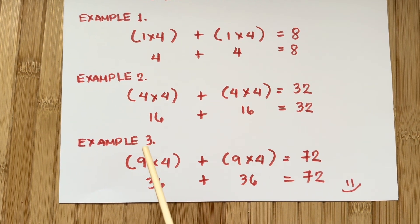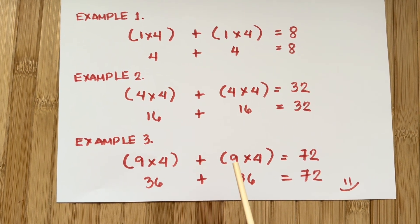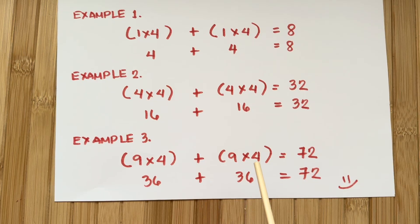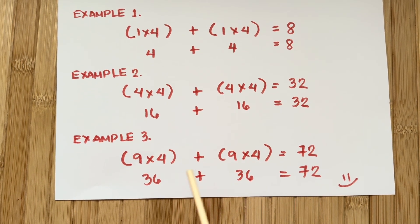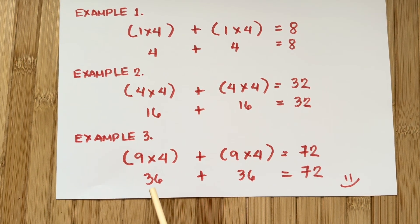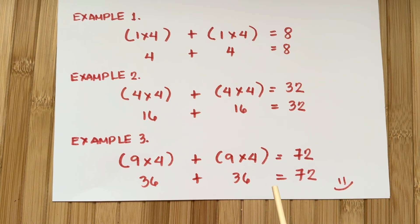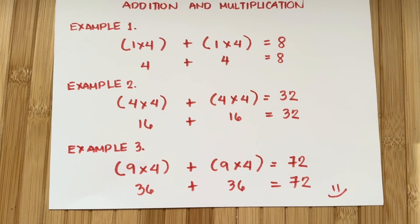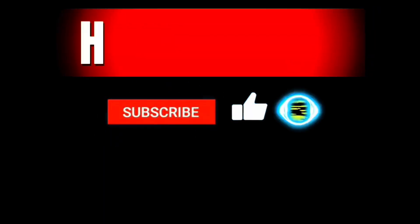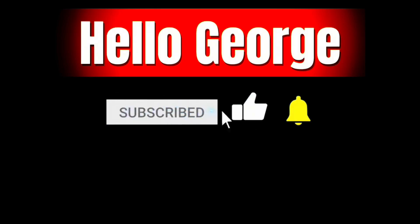Example number 3: 9 times 4 plus 9 times 4 is equals to 72, or 36 plus 36 is equals to 72. Please don't forget to like and subscribe. Thank you.